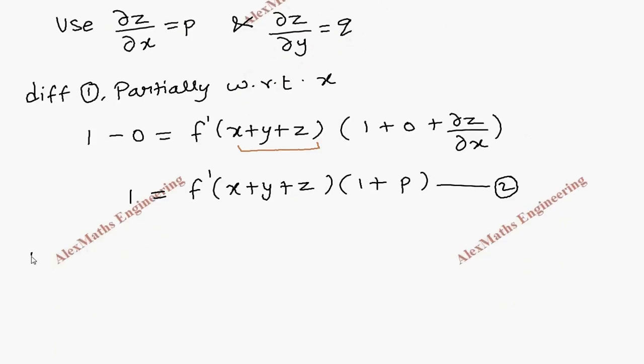Now again we are going to take the first expression and differentiate it partially with respect to y. So first term x is 0, y derivative is 1, and f derivative is f' and all the inner terms should be written as is.